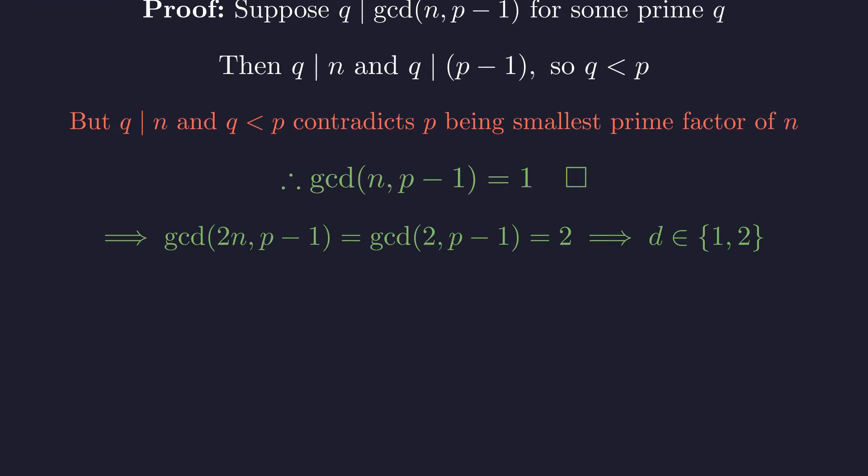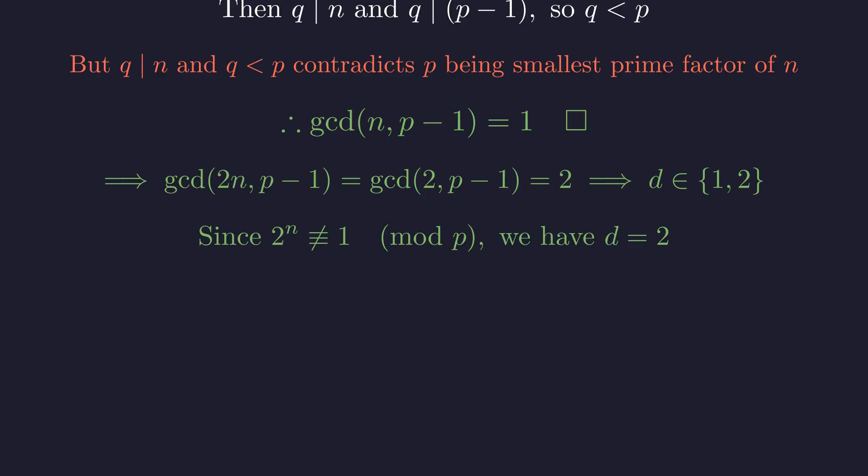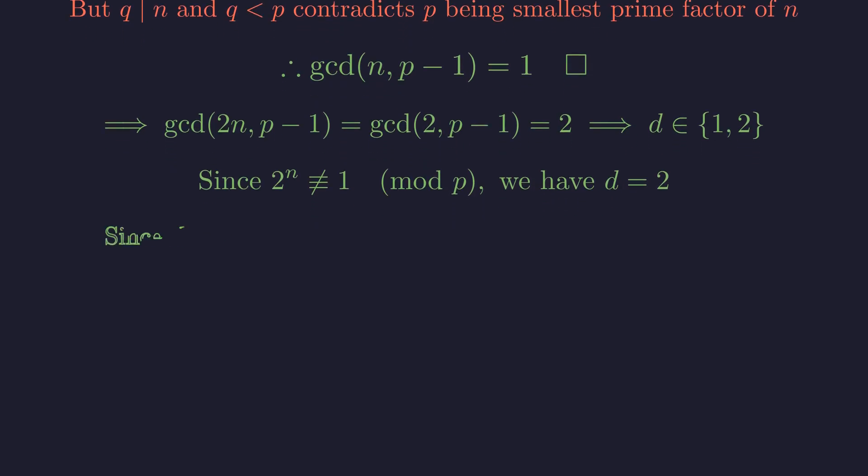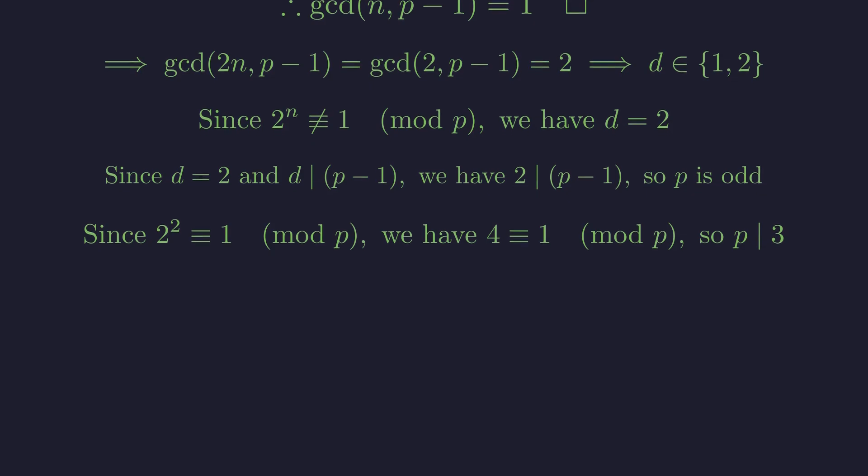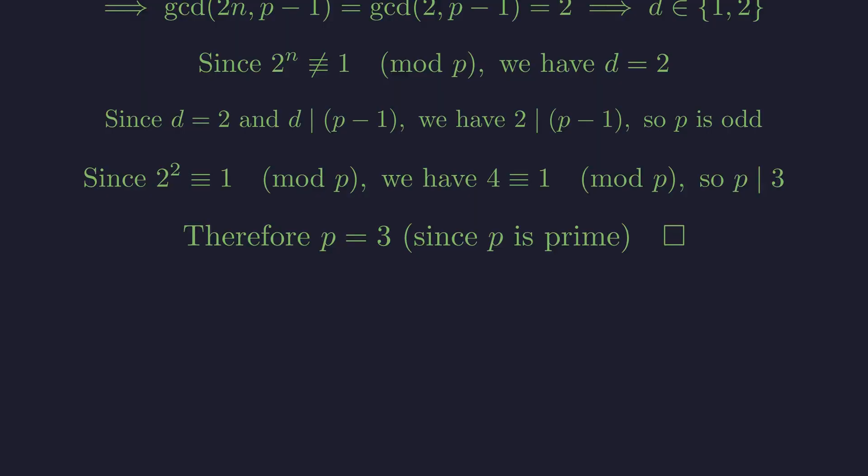This collapses the entire expression. Since p cannot be 2, as 2 doesn't divide the odd number 2 to the n plus 1, p is odd, so p minus 1 is even. Therefore, the GCD becomes exactly 2, and d can only be 1 or 2. Since 2 to the n is not congruent to 1 modulo p, we cannot have d equals 1, so d must equal 2. Since d equals 2, and d divides p minus 1, we have 2 divides p minus 1, confirming p is odd. Since 2 squared is congruent to 1 modulo p, we have 4 congruent to 1 modulo p, which means p divides 3. Therefore, p equals 3, since p is prime and divides 3.